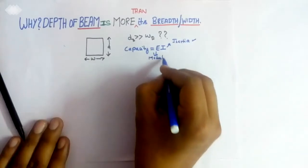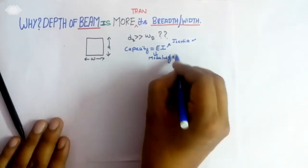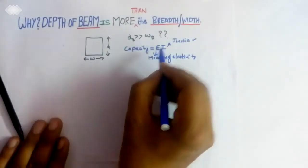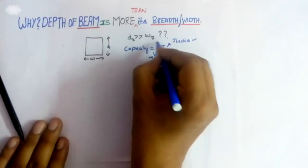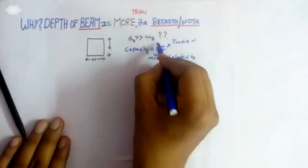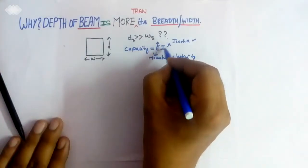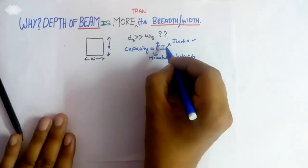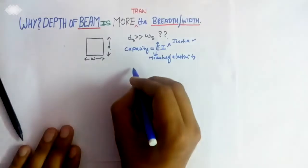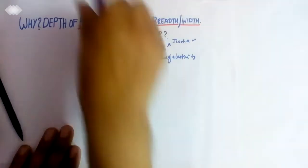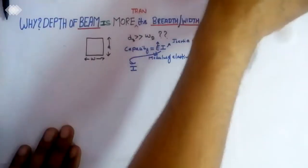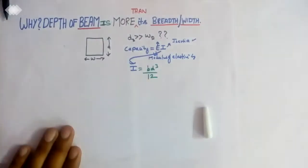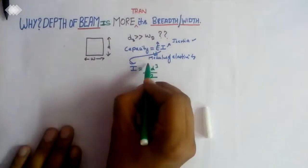The modulus of elasticity is a property that depends upon the material, and the moment of inertia depends upon the geometric dimensions like breadth and depth. I is equivalent to BD³/12 where B is the breadth and D is the depth.